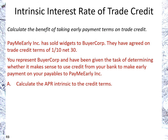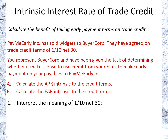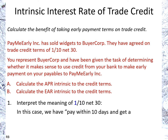Our job is to calculate the APR intrinsic to the credit terms and the EAR intrinsic to them. First, we need to interpret the meaning of 1/10 net 30. It basically means pay within 10 days in order to get a 1% discount; otherwise, pay within 30 days.